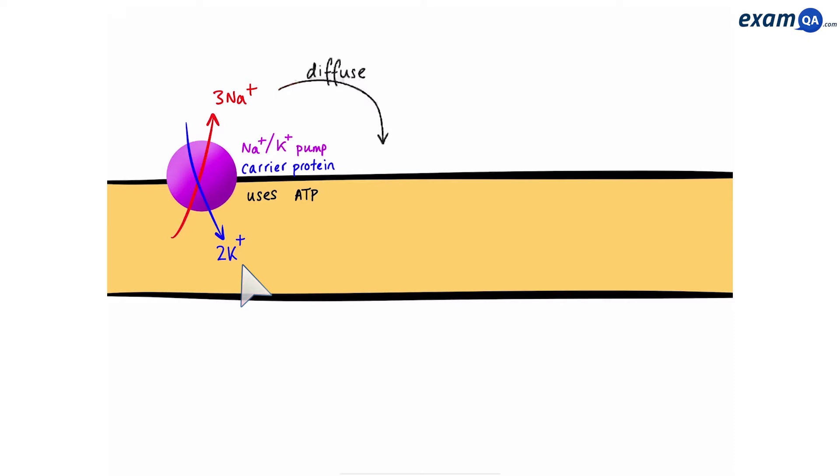Now, the sodium ions on the outside are building up, so they want to diffuse in. However, because they're ions, they're going to need a sodium ion channel. Now, most of these sodium ion channels are closed. Also, they are voltage gated, which means they will only open up when a specific voltage has been reached. We'll talk about that later. But for now, we can see that the sodium will not be able to enter, so the concentration of sodium on the outside of the neuron will increase.